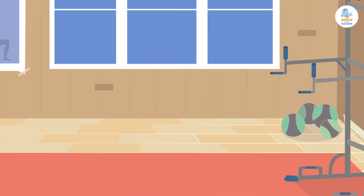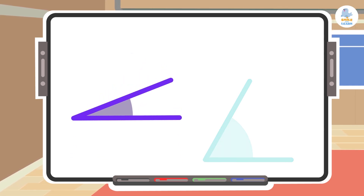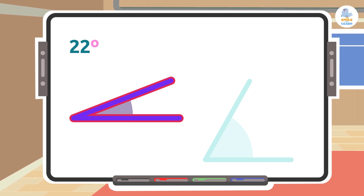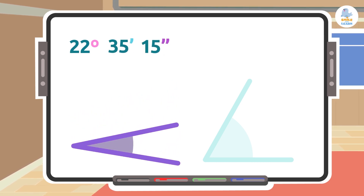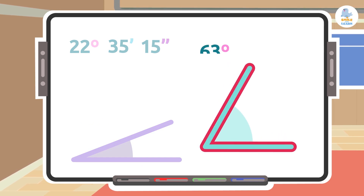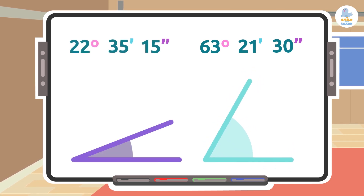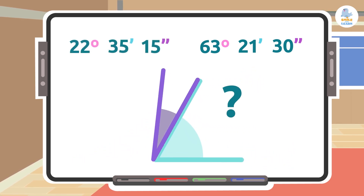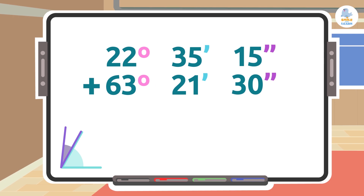Let's start. We need to add the following angles: on one side we have one measuring 22 degrees 35 minutes 15 seconds, and on the other side we have one measuring 63 degrees 21 minutes 30 seconds. What would be the exact sum of both angles? Pay attention.